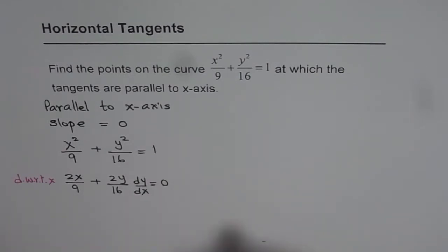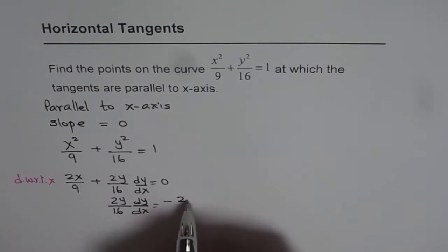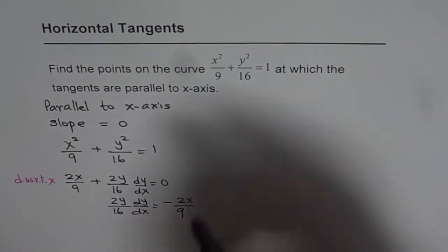dy/dx from here can be written as 2y/16 dy/dx = -2x/9. So let me take this to the right side and solve it further.